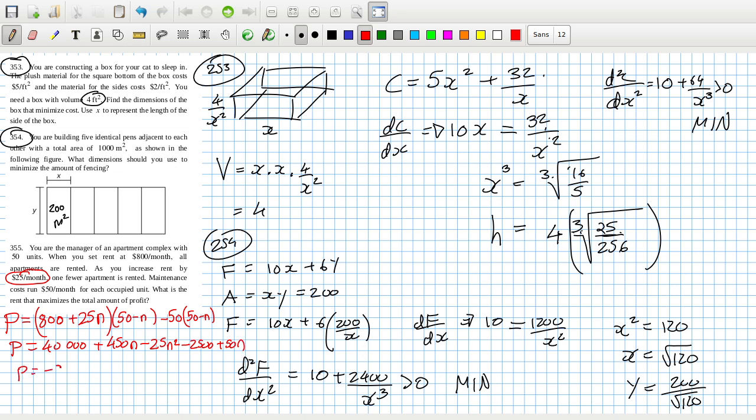So the profit is minus 25N squared plus 500N plus 37,500. And the derivative equals minus 50N plus 500 equals zero.